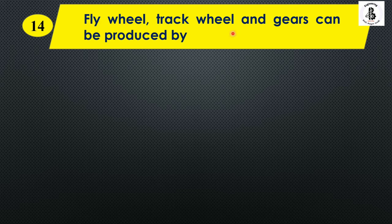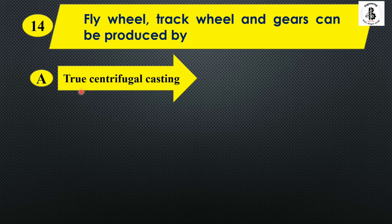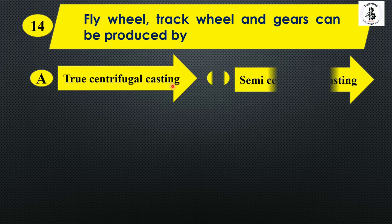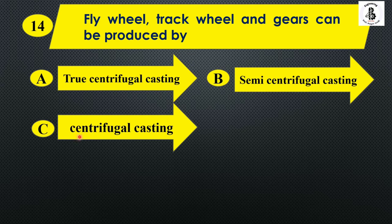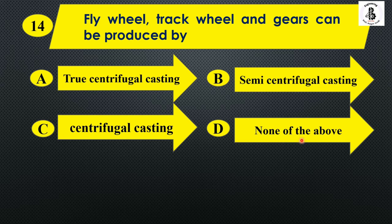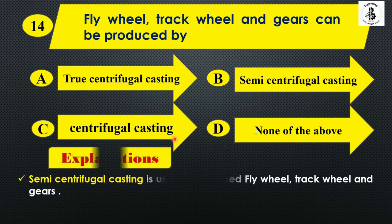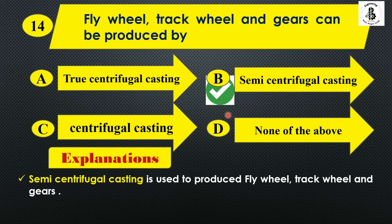Flywheels, track wheels and gears can be produced by: Option A: true centrifugal casting, Option B: semi-centrifugal casting, Option C: centrifugal casting, and Option D: none of the above. If you want to make flywheels, track wheels, or gears, they are produced by the semi-centrifugal casting process. So the right answer is Option B.